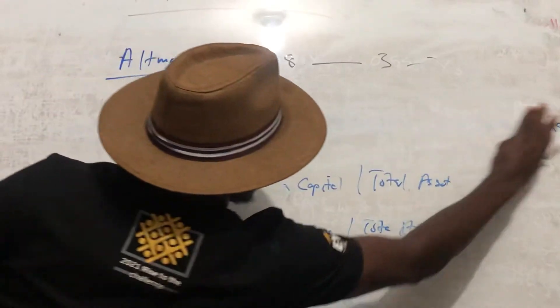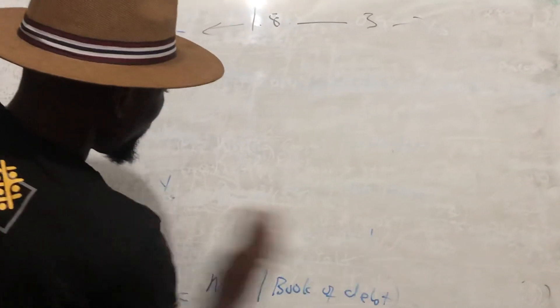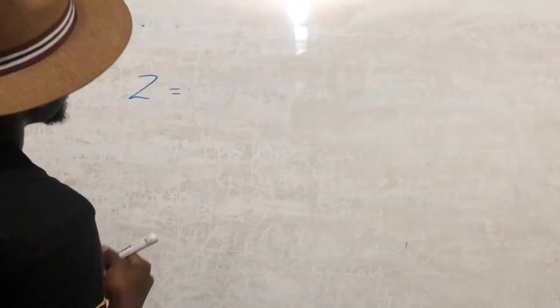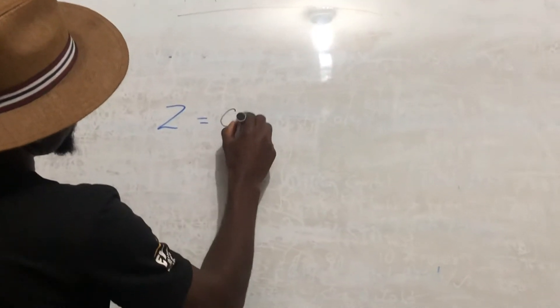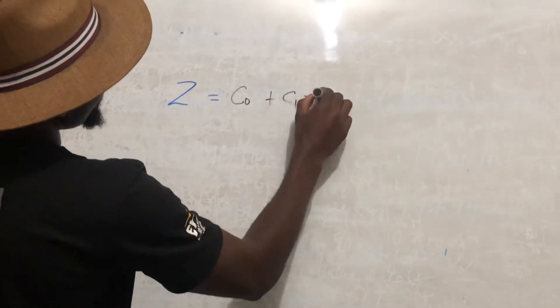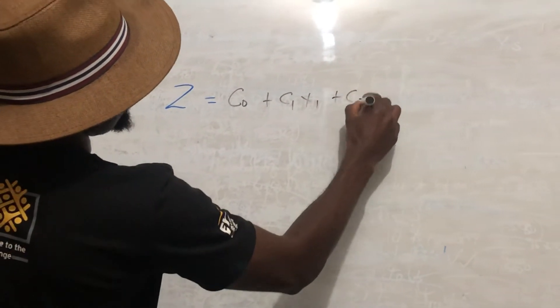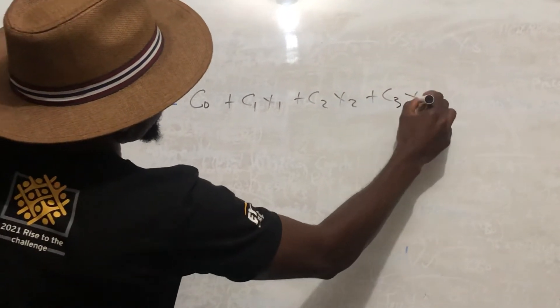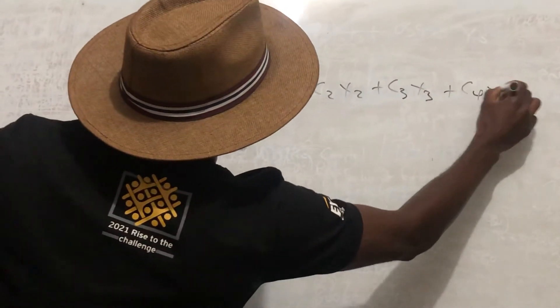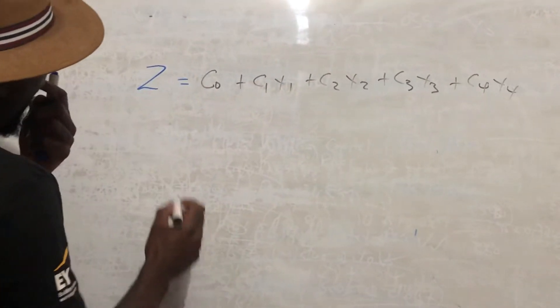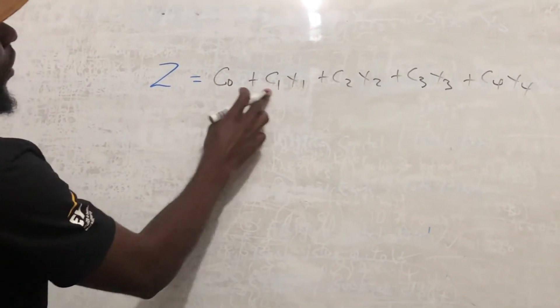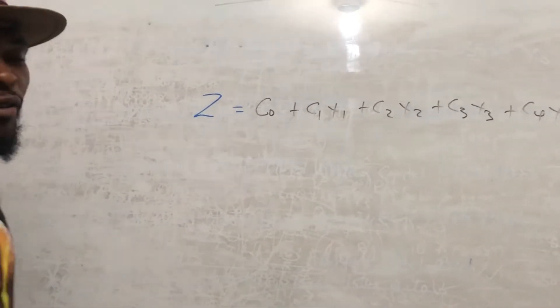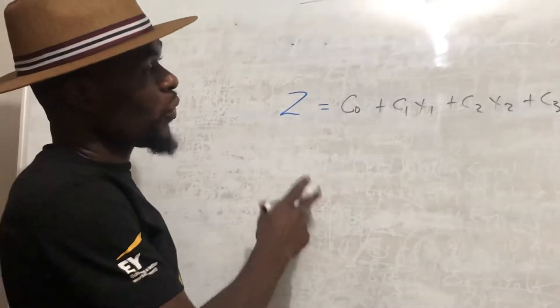Now let's quickly move to the Tafler Z-score. The formula is: Z = C0 + C1·X1 + C2·X2 + C3·X3 + C4·X4, where C0 through C4 are coefficients that will normally be given to you in a question.